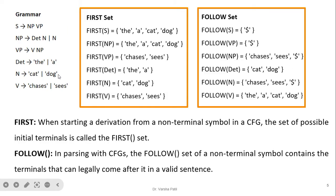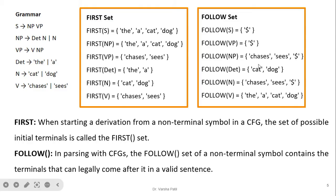For Follow(determiner), on the right-hand side we see determiner followed by N, so we take First(N), which is 'cat' and 'dog'. For Follow(N), after N nothing is present in both rules, so we take Follow(NP), which is 'chases', 'sees', and dollar. For Follow(V), after V there is NP, so we take First(NP), which is 'the', 'a', 'cat', and 'dog'. In this way the first and follow sets are created.